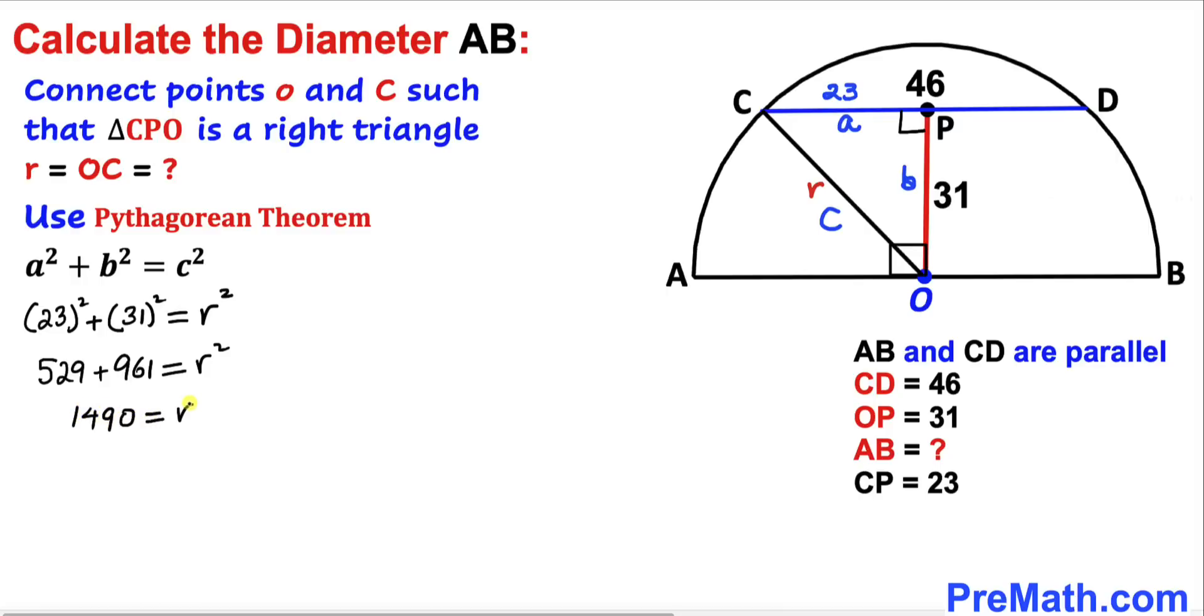Let's take the square root on both sides to undo this square. The square and square root undo each other, so our radius r is approximately equal to 38.6 units.